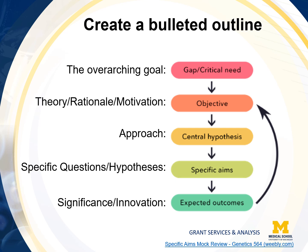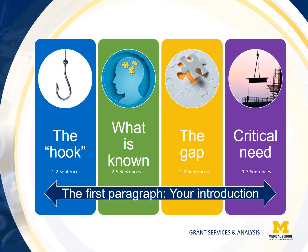Next, you will expand your bullets into sentences forming the draft of your specific aims. For the first paragraph, your introduction: in one to two sentences, start with the hook — define the big picture or the central challenge of your field, what the research problem is, and why it's important. Make sure to explain specialized terminology to maintain reviewers' goodwill. Next is the known: in two to five sentences, write what is known about the problem and what has been done to solve it. Educate and inform the reviewer about what is currently known, collecting and critically reviewing the literature from the oldest to the most recent facts and studies.